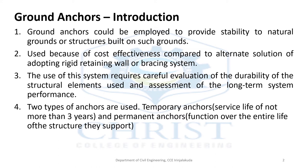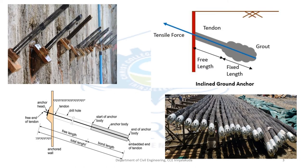There are two types of anchors: temporary anchors and permanent anchors. Temporary anchors can be used for not more than three years, but permanent anchors will function for the entire life of the structure they support. These are pictures of a ground anchor, showing two parts — the free length and the fixed length, with tendon and grout used for anchoring.